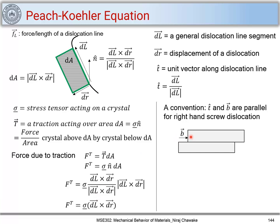Let's make a convention: when the crystal shears, the crystal above shears with respect to the crystal below. The traction force acts by the crystal below dA on the crystal above dA. We define the convention that t and b are parallel for a right-hand screw, meaning movement in that direction is positive. When the top crystal slips over the bottom crystal in this direction, that displacement is considered positive. The internal work done on the crystal is evaluated as W_crystal_internal.